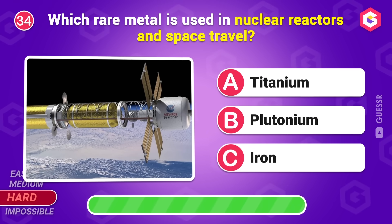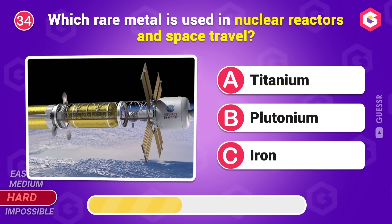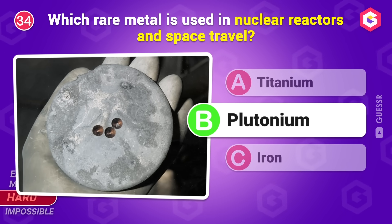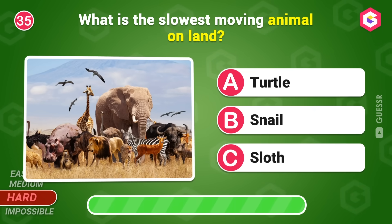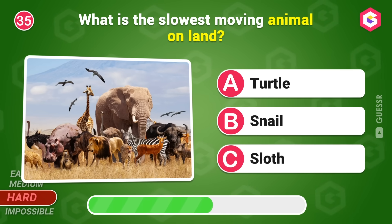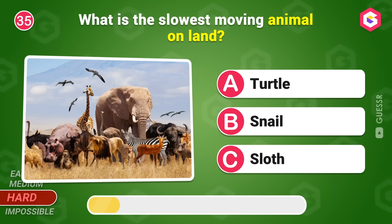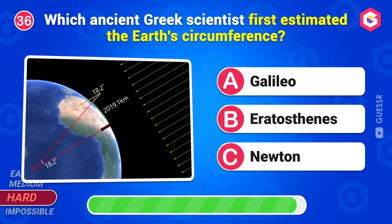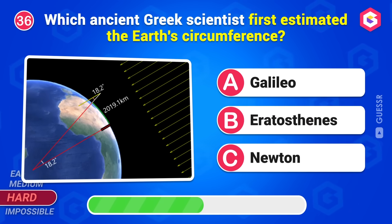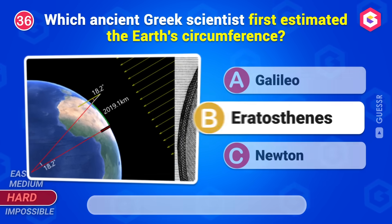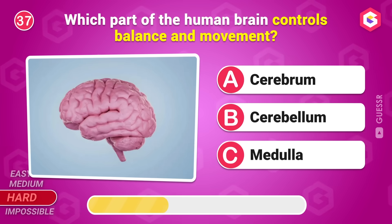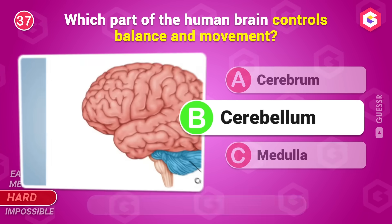Which rare metal is used in nuclear reactors and space travel? Plutonium. What is the slowest-moving animal on land? Sloth. Which ancient Greek scientist first estimated the Earth's circumference? Eratosthenes. Which part of the human brain controls balance and movement? Cerebellum.